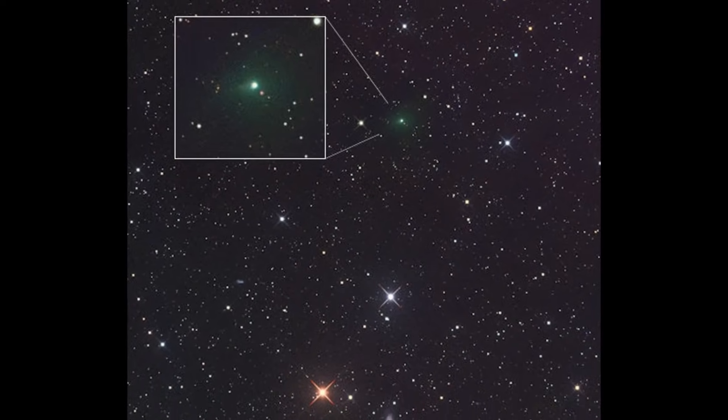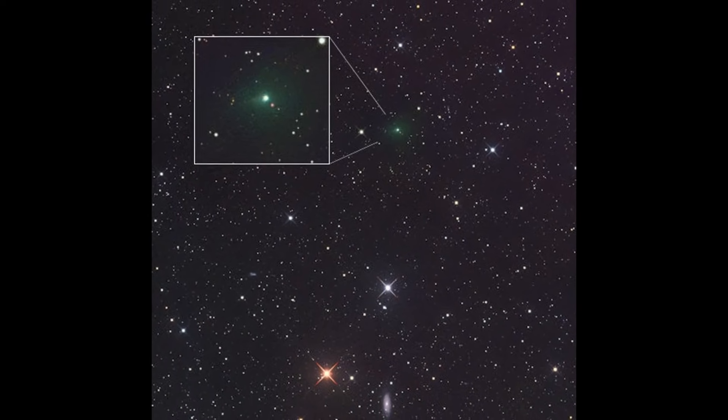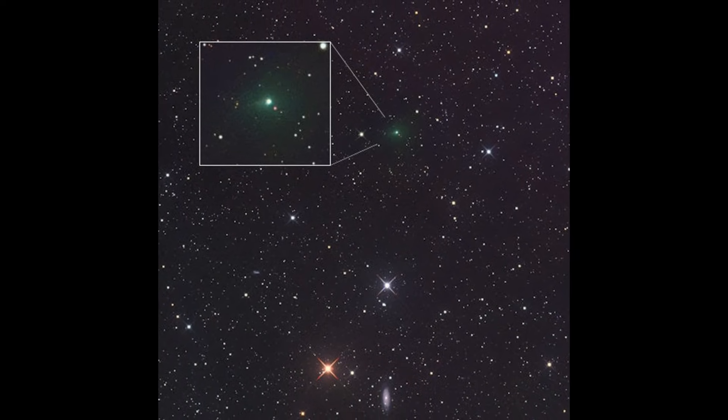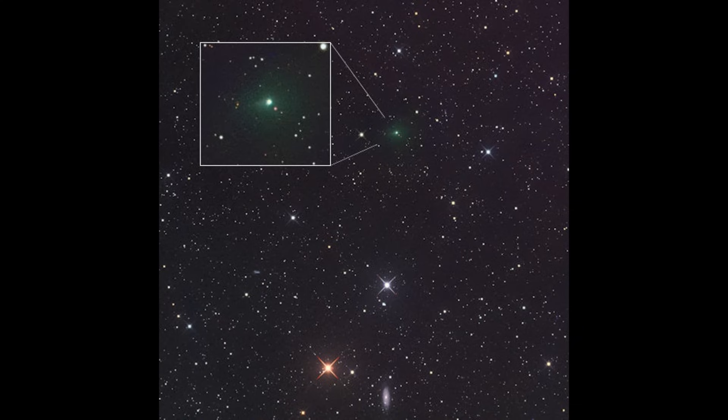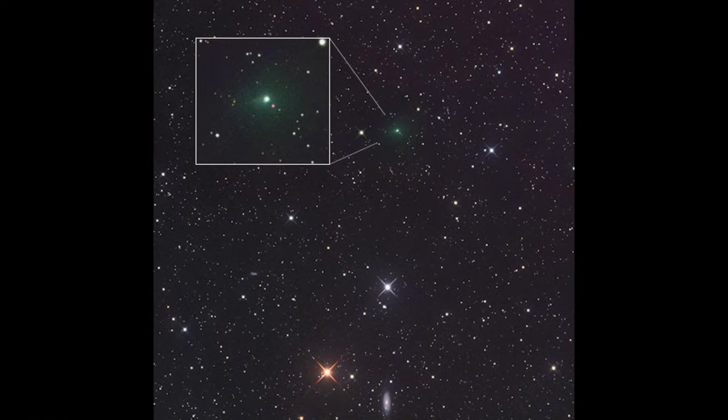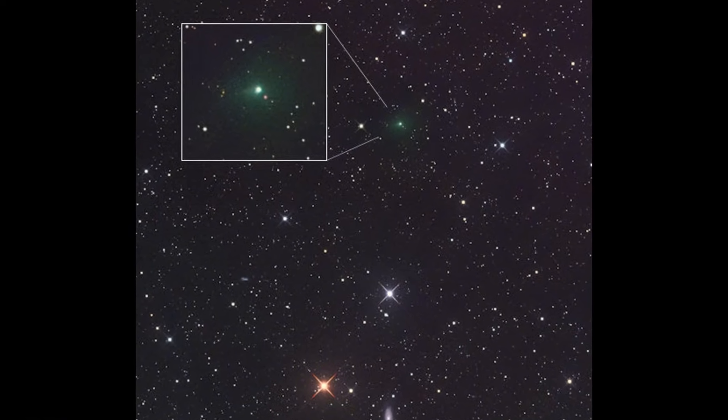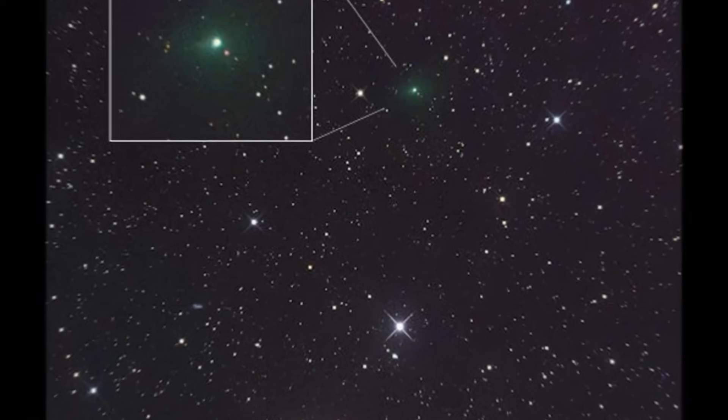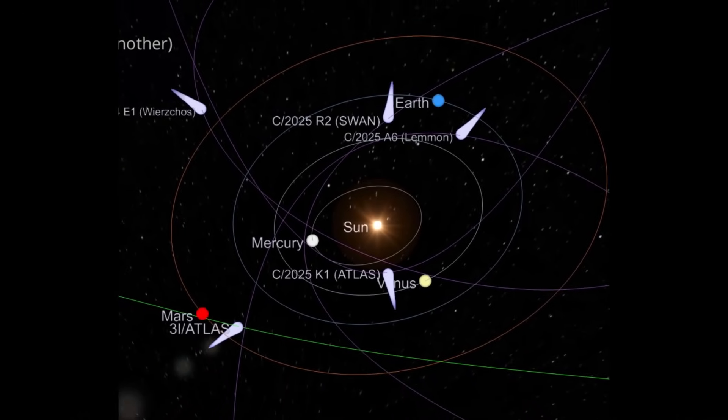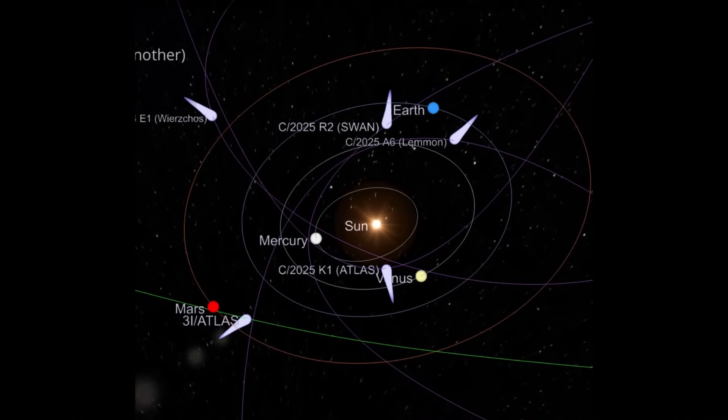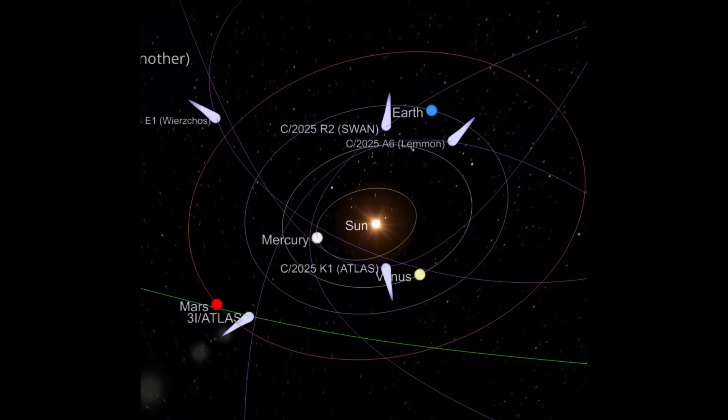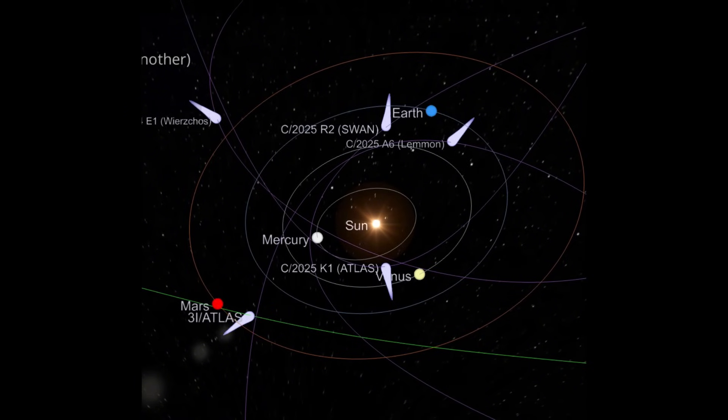The fleeting nature of such encounters is part of what makes them so profound. Humanity has observed only three confirmed interstellar objects. Each has overturned expectations and left more questions than answers. Oumuamua showed us that interstellar visitors may take forms unlike anything we've cataloged. Borisov suggested that other systems may produce comets broadly similar to our own.